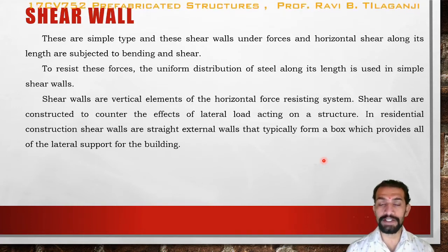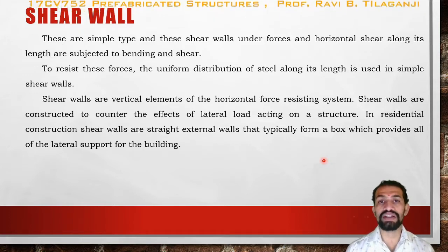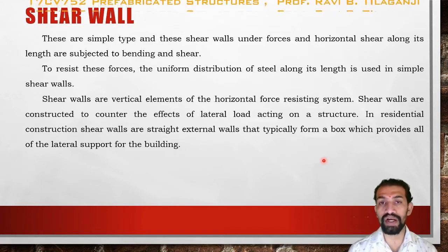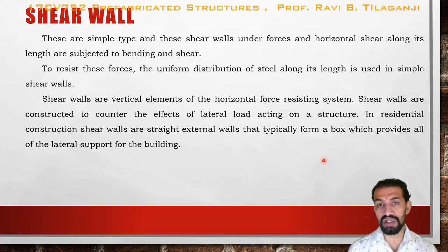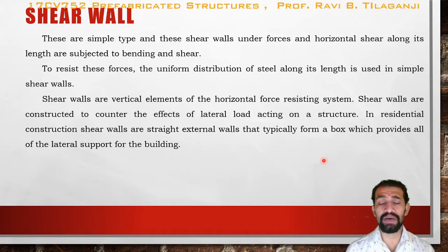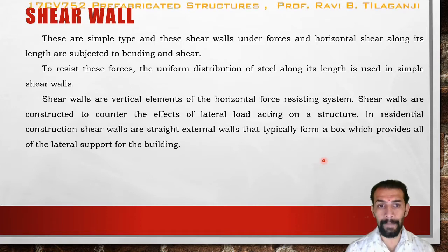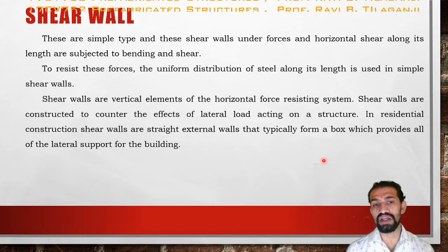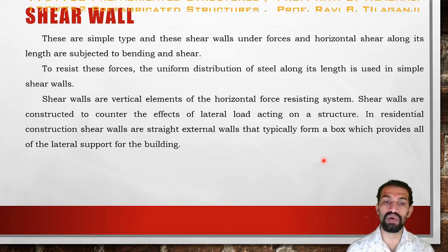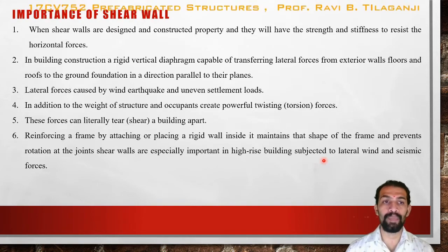In normal buildings, the perpendicular external walls act as small elements of a shear wall, but since no reinforcement is provided in those walls — they are totally brick walls or stone masonries — they act only partially as shear walls. In residential construction, shear walls are straight external walls that typically form a box, which provides all the lateral load support for the building.